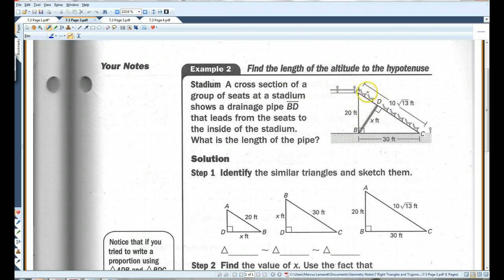I'm going to take this triangle and flip it around so it looks like this. This triangle, I'm also going to flip around so the right angle's on the bottom. And then the big triangle is already lined up for us. Triangle ADB is similar to triangle BDC, which is similar to triangle ABC.